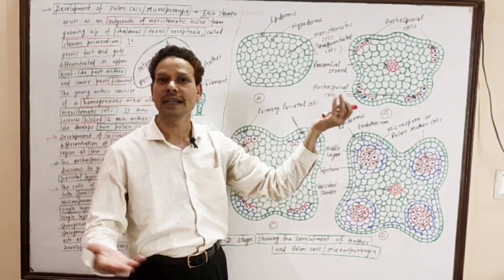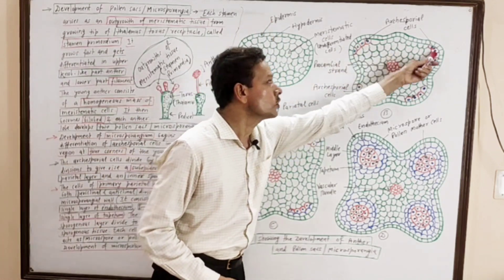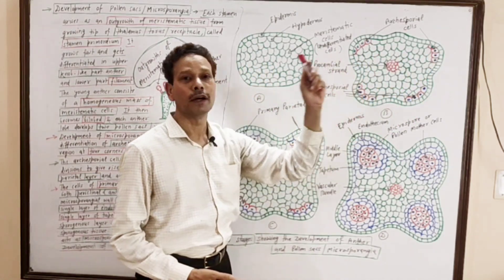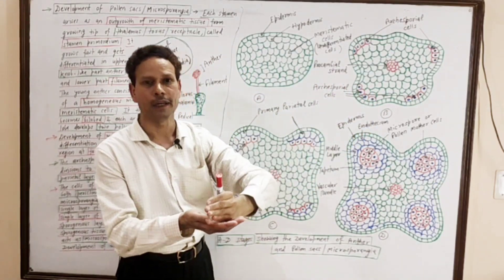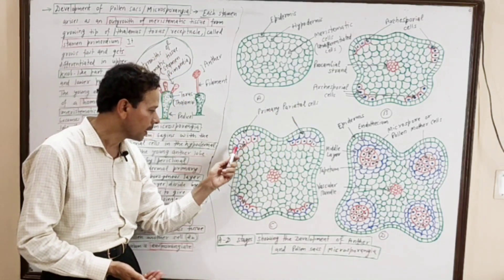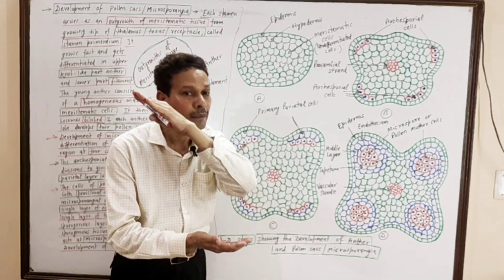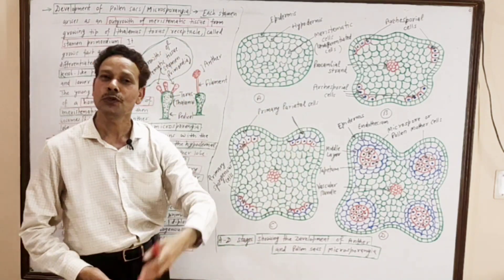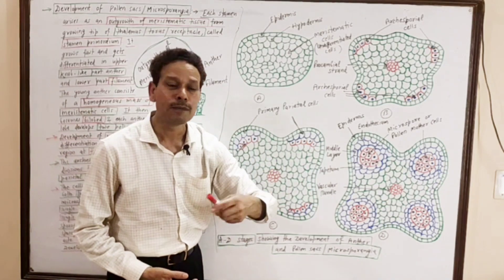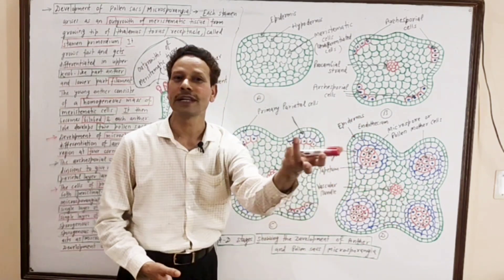In the young anther, which is a mass of meristematic cells that becomes bilobed, strips of archesporial cells develop at the four corners. These archesporial cells divide periclinally, forming two layers — the outer primary parietal layer and the inner primary sporogenous cells layer. The cells of the primary parietal layer divide both periclinally and anticlinally to give rise to the wall of the pollen sac. That wall consists of four layers: outermost epidermis, endothecium, middle layers, and the innermost tapetum.